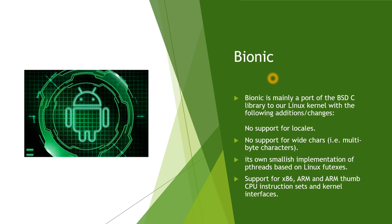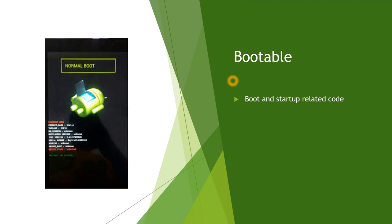Next we'll see what is Bionic. Bionic is mainly a part of the BSD C library ported to the Linux kernel with the following changes. Bionic is nothing but a C library present in the Android system. There is no support for locales, no support for wide or multi-byte characters. It has a smallish implementation of pthreads based on Linux, supports x86, ARM, and ARM Thumb CPU instruction sets and kernel interfaces. In short, Bionic contains all the C libraries required by the Android system.